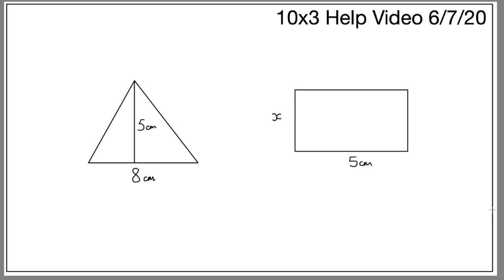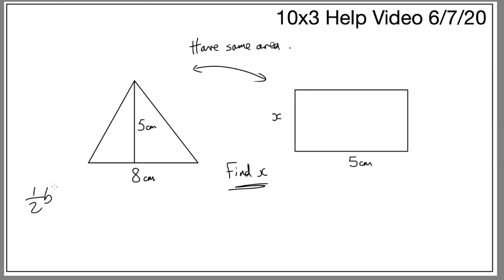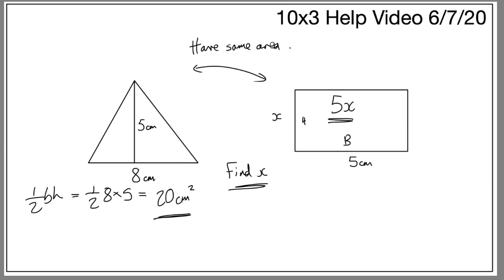Here's an example of a slightly more challenging question. We're told that these two shapes have the same area, and we want to find the value x. We use the area of a triangle: half base times height, which gives half of 8 times 5, so the triangle's area is 20 centimeters squared. The rectangle's area is 5 times x, or 5x. So 5x equals 20, and dividing by 5 gives x equals 4 centimeters.